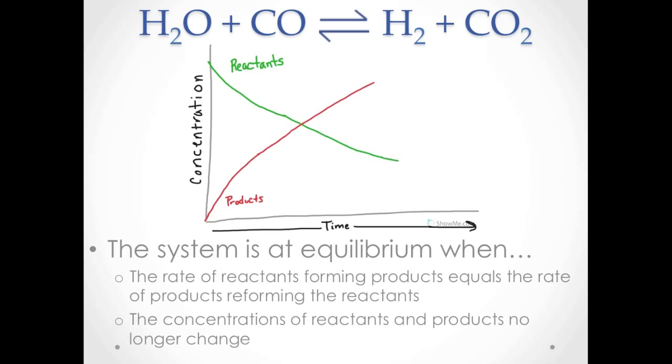Once the system reaches equilibrium, water and carbon monoxide are forming hydrogen and carbon dioxide just as fast as hydrogen and carbon dioxide are forming water and carbon monoxide. Since those rates are now equal, the concentrations of water, carbon monoxide, hydrogen, and carbon dioxide remain constant. Both of these conditions exist for a system at equilibrium.